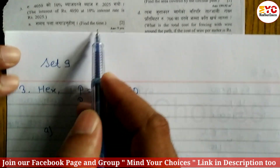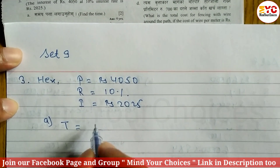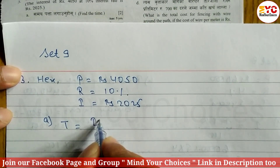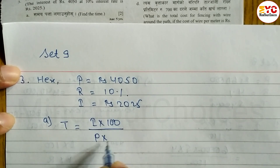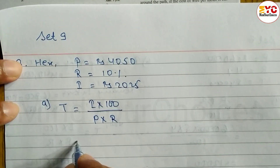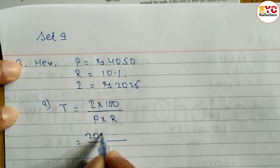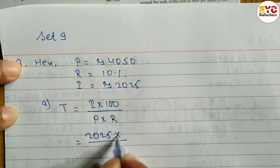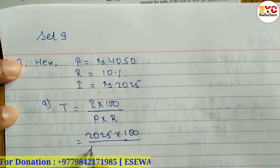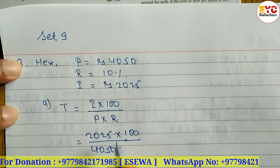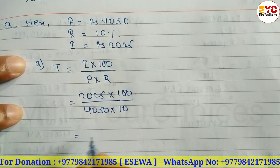The question asks us to find the time. The formula for time is: T = (I × 100) / (P × R). The value of I is 2025, multiplied by 100, divided by P which is 4050, multiplied by R which is 10%.